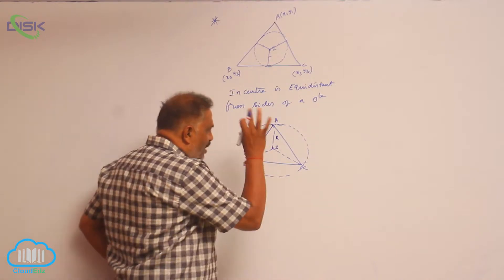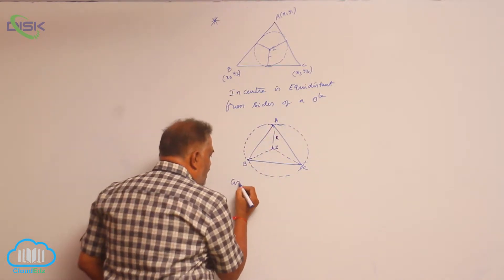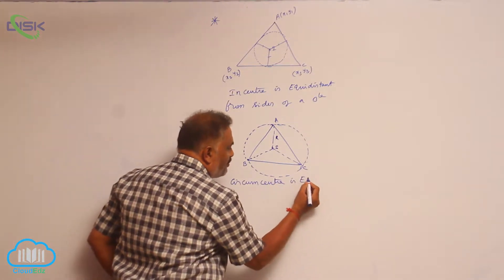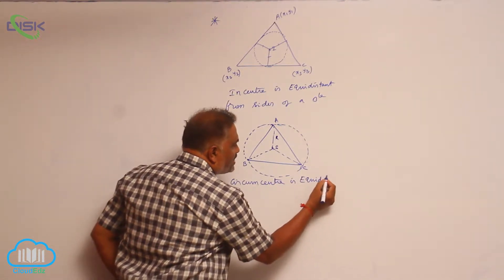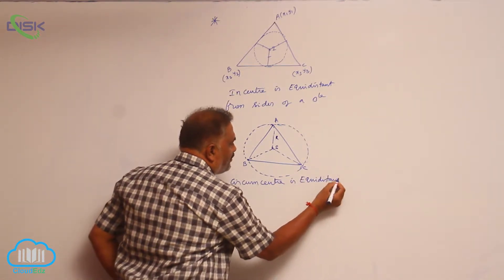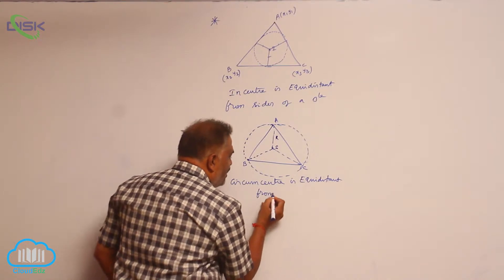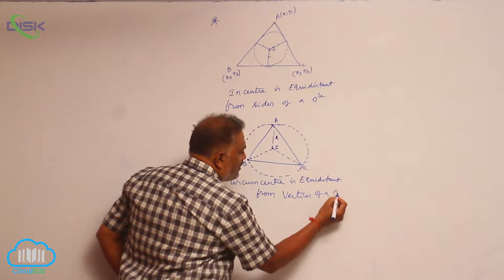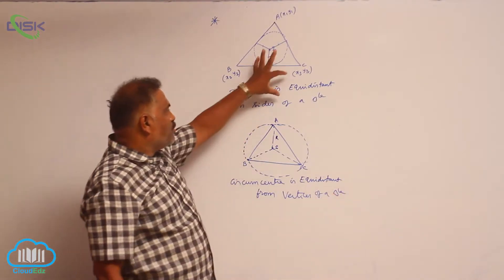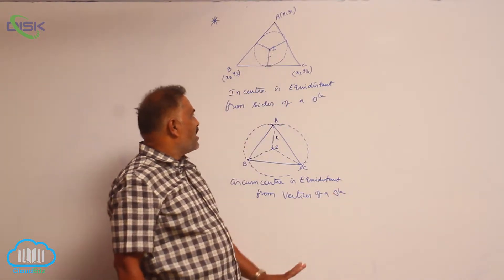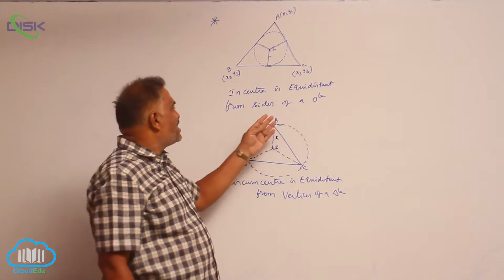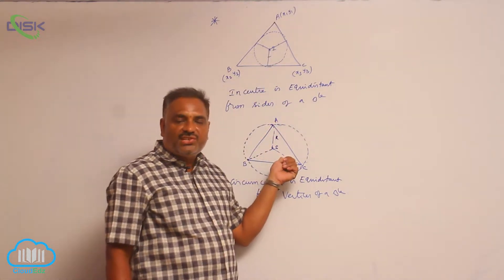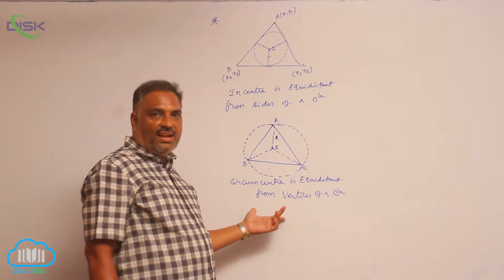So the conclusion is: the circumcenter is equidistant from the vertices of a triangle. The two conclusions are: incenter is equidistant from the sides of a triangle, whereas circumcenter is equidistant from the vertices of a triangle.